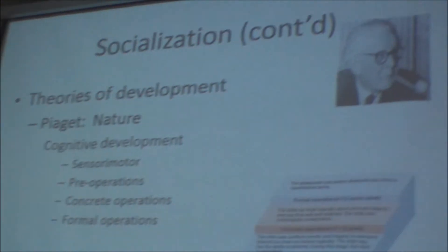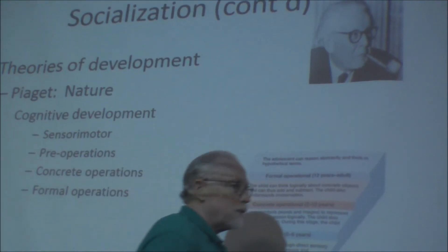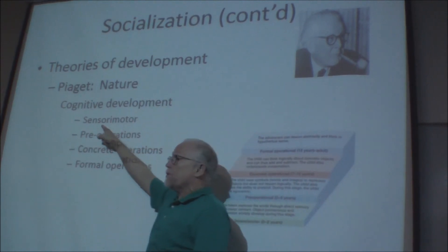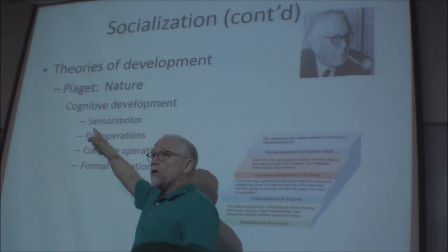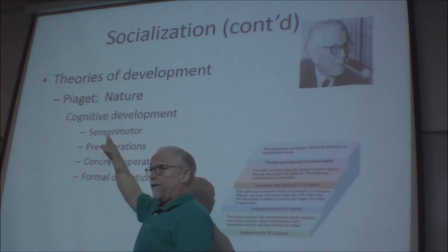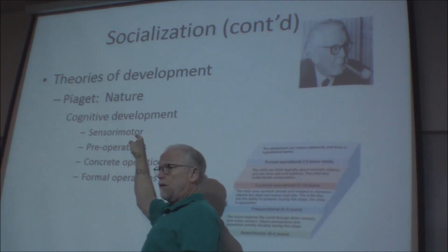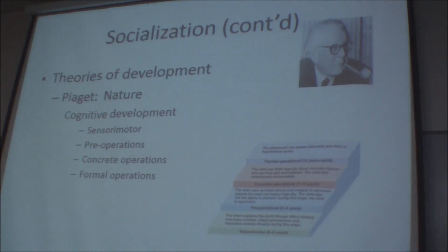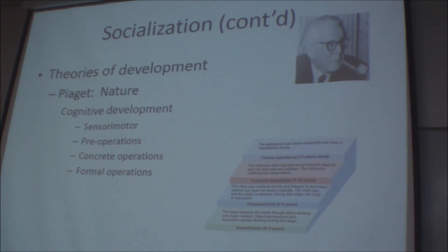We talked about the first stage — sensory motor. Child just born. What can it do? Nothing really. From zero to two years old, that child is capable of sensing and moving, end of story. A big deal for a little baby is when it's able to turn over by itself, sit up, crawl. Remember object permanence — have you talked about object permanence in this class?